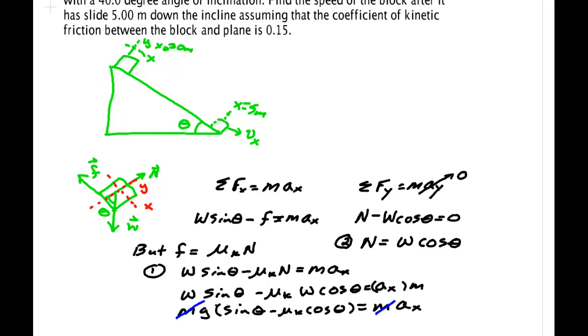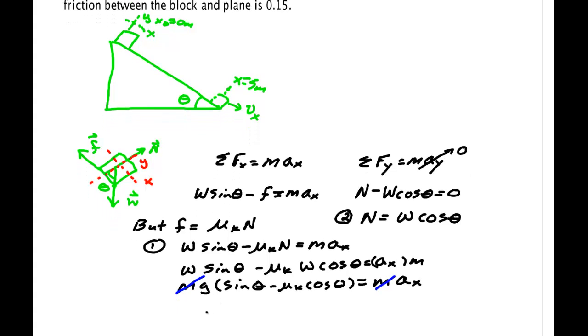So what do we find? Well we found the acceleration. A x is equal to g times sine theta minus mu k cos theta. And we've done more than that.